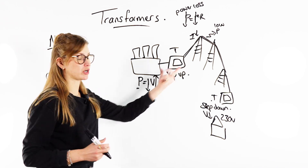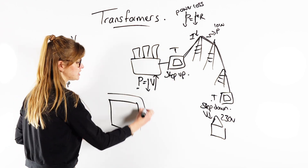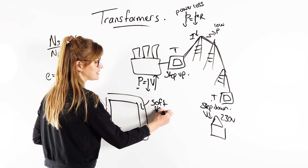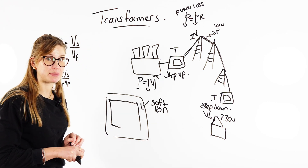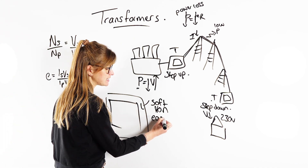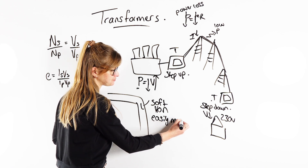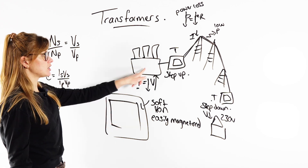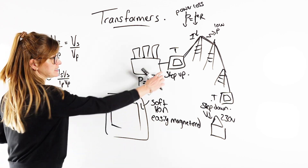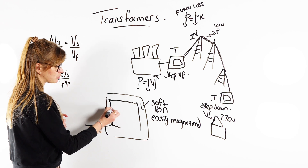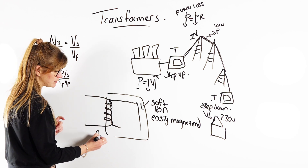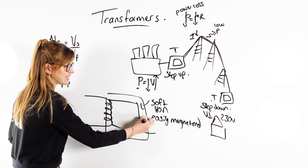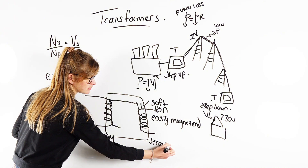So how do transformers actually work? Inside a transformer, it is always made of iron — normally soft iron, because soft iron can be easily magnetised and demagnetised. We have our power station connected to what we call the primary coil — the first side. The second side we call the secondary coil.